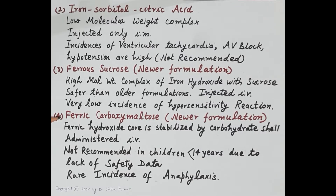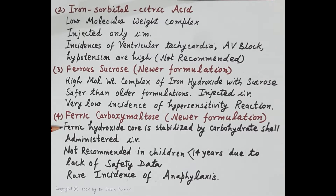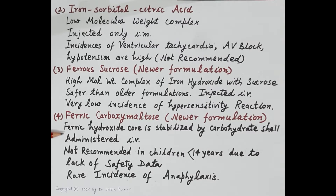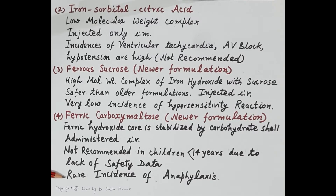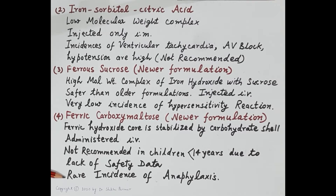Ferric carboxymaltose is the latest formulation of parenteral iron, in which a ferric hydroxide core is stabilized by a carbohydrate shell. It is administered either by intravenous injection or intravenous infusion. Due to the lack of safety data, it is not recommended for children under 14 years of age. It produces mild side effects such as pain at the injection site and rashes, but the incidence of anaphylaxis is rare.